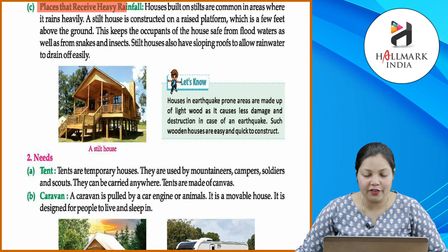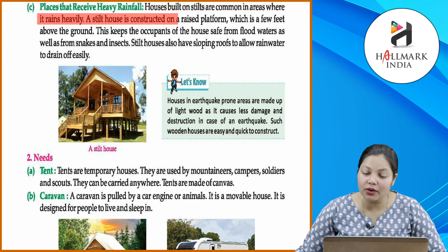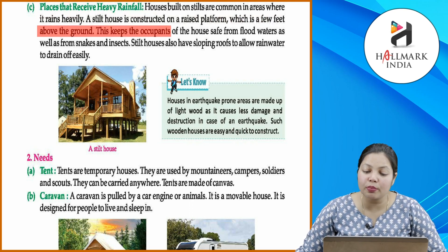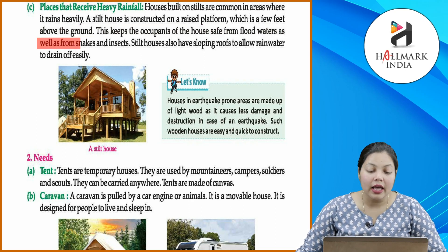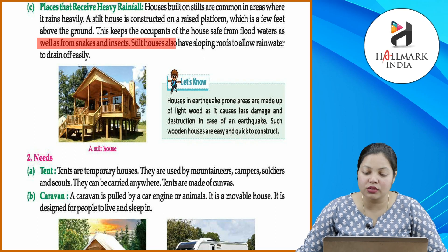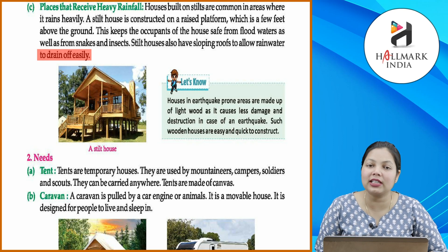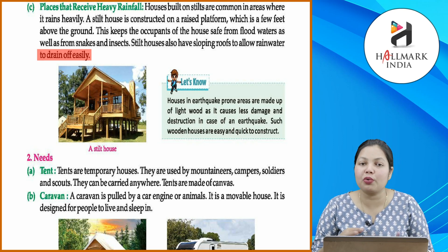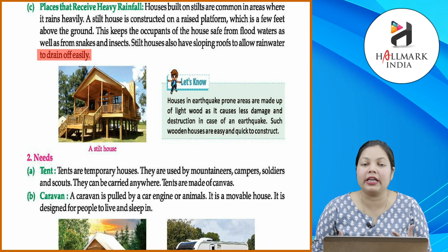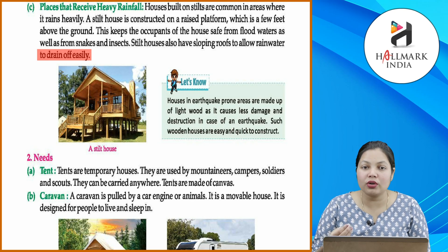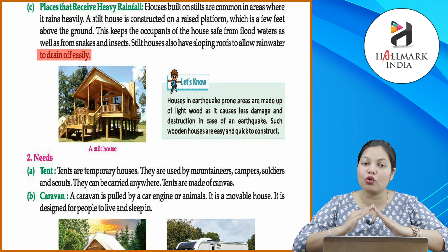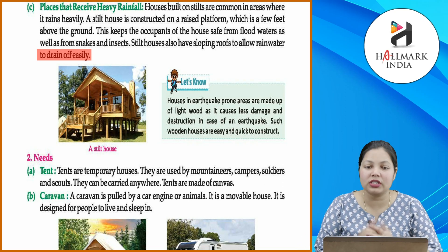Houses built on stilts are common in areas where it rains heavily. A stilt house is constructed on a raised platform which is a few feet above the ground. This keeps the occupants of the house safe from floodwaters as well as from snakes and insects. Stilt houses also have sloping roofs to allow rainwater to drain off easily. Yahan pe heavy rainfall hoti hai, un areas mein stilt houses banaye jaate hain, taaki rainwater ghar ke andar na aaye aur insects aur snakes se bache reh sakein. Inki roofs bhi slopey banai jaati hain taaki rainwater easily drain out ho sake.